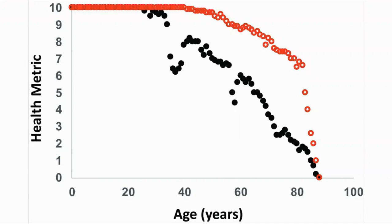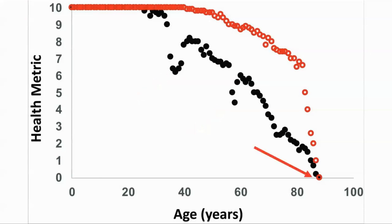Here are two example lines where we can see that the person displayed in black dots has two illnesses at around 36 and 57, and was generally lower in health than the person shown in the red circles, who was quite healthy and then died after a short illness. Both people died at 87, but the area under the curve of the Healthspan is very different: 610 versus 796. This mechanism would allow us to put a solid metric to the difference, making it possible to statistically compare interventions.